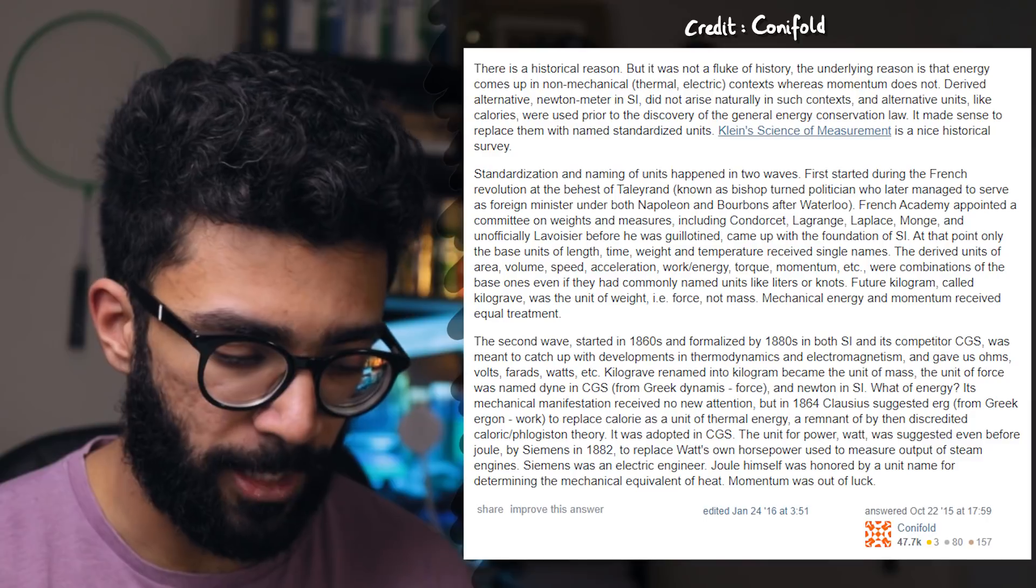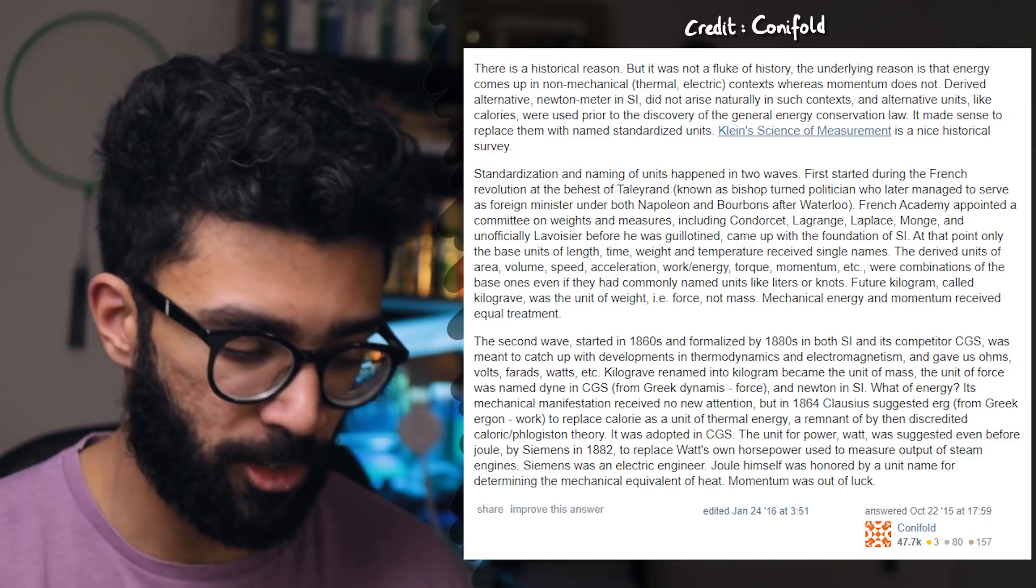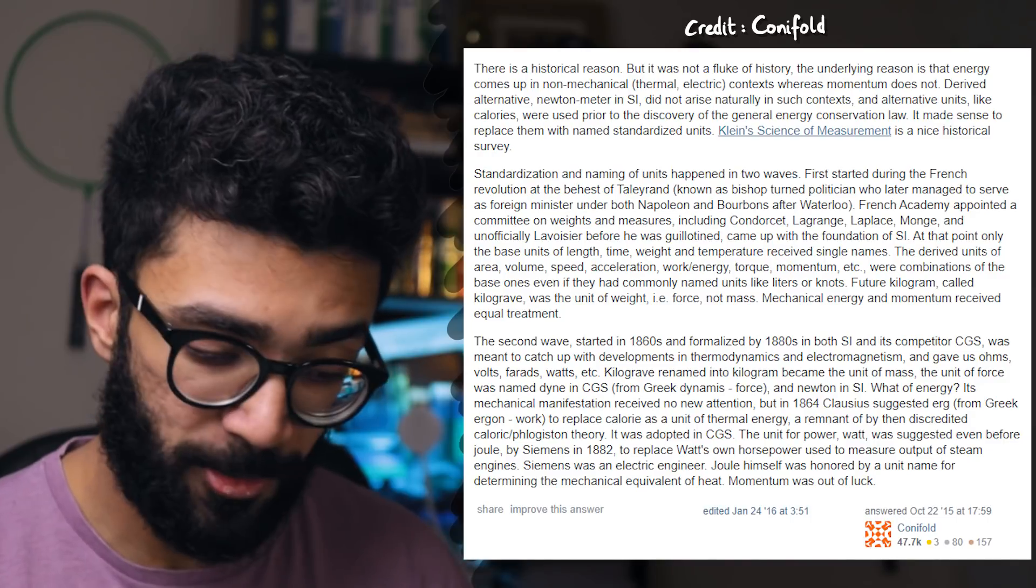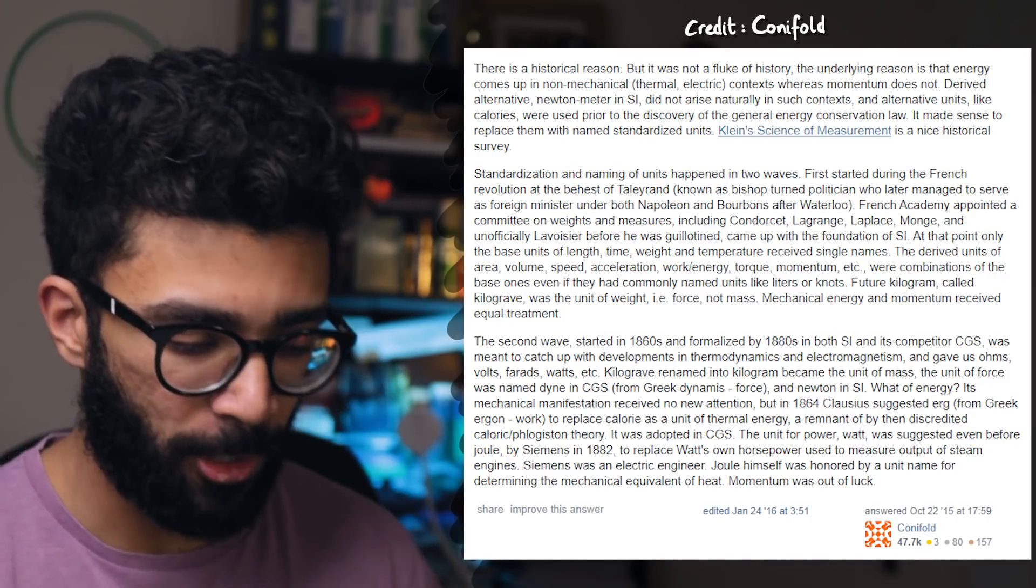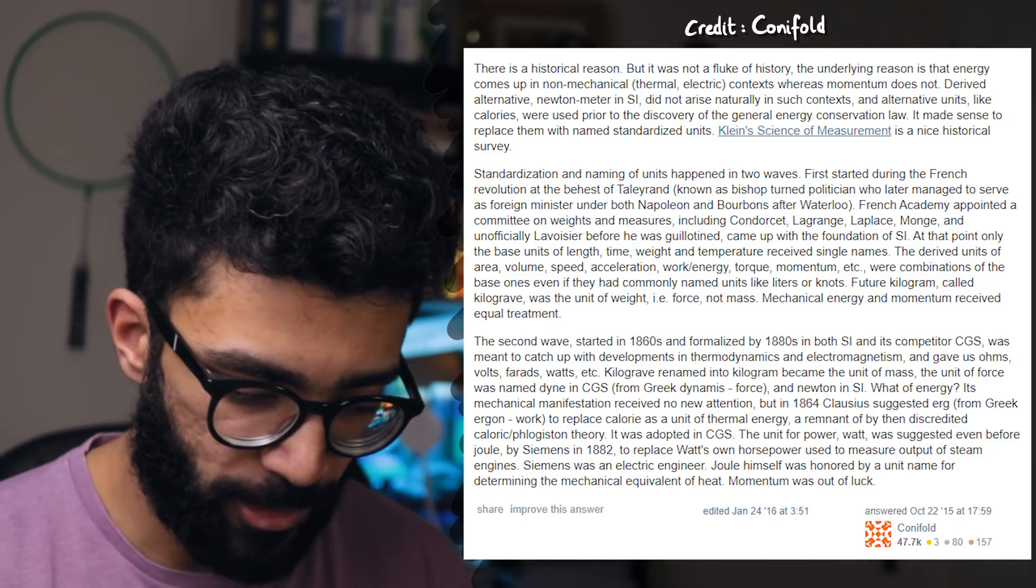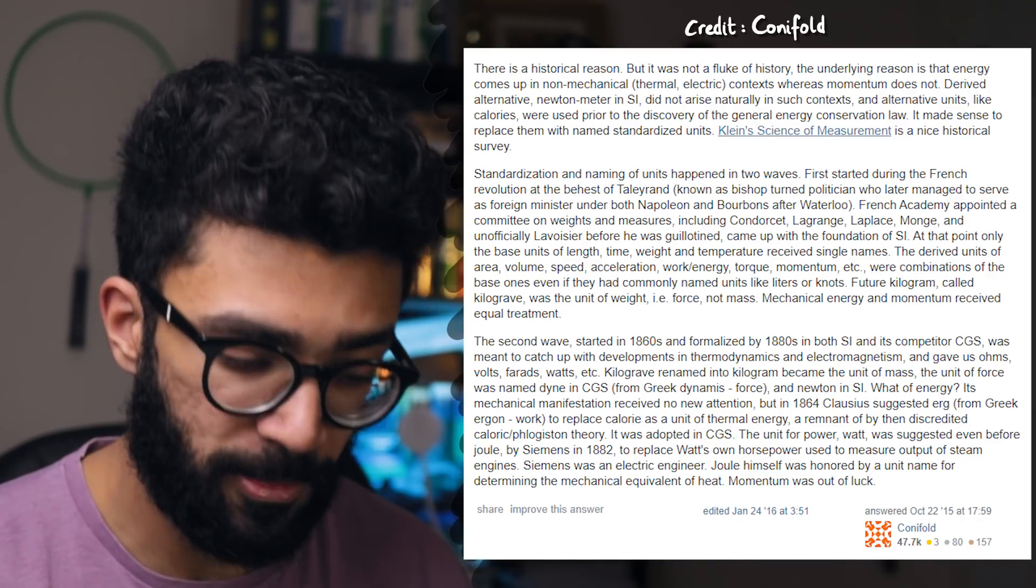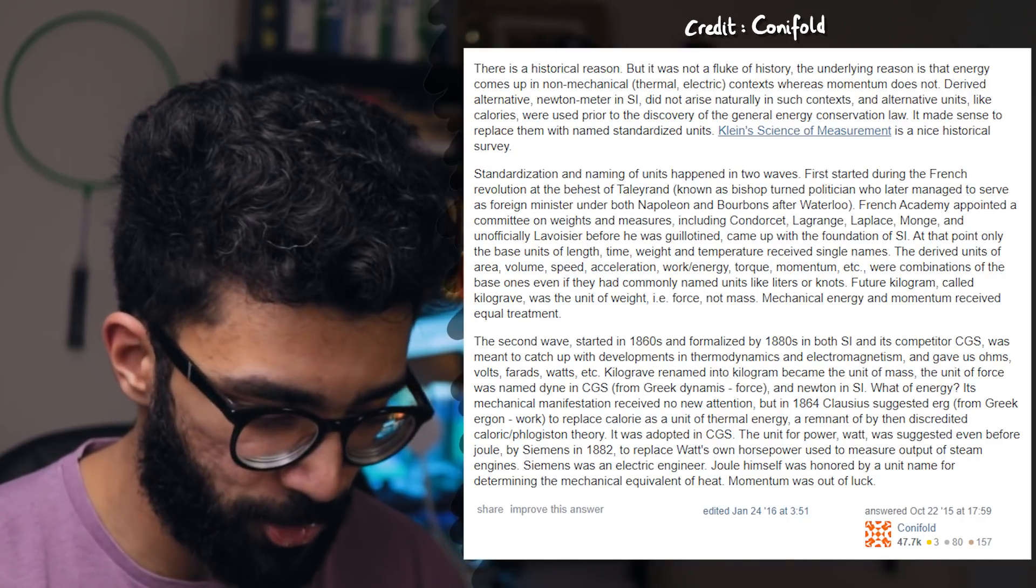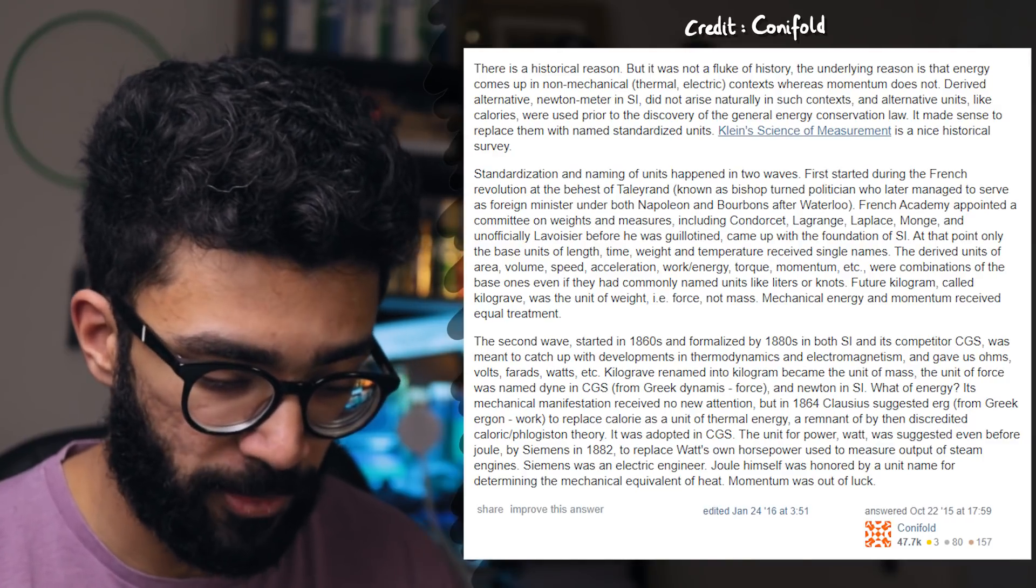Standardization and naming of units happened in two waves. First started during the French Revolution at the behest of Talleyrand, known as bishop turned politician, who later managed to serve as foreign minister under both Napoleon and Bourbons after Waterloo. God, I love a good Bourbon. French Academy appointed a committee on weights and measures, including Condorcet, Lagrange, Laplace, Monge, and unofficially, Lavoisier, before he was guillotined, came up with a foundation of SI.